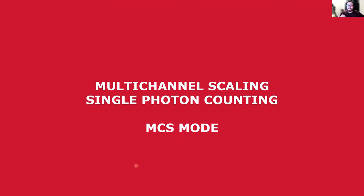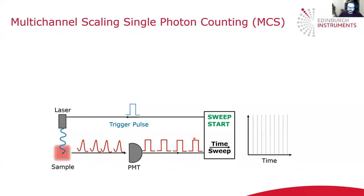The solution is to use a complementary measurement mode in the FLS1000 called multi-channel scaling single photon counting, or MCS mode for short. The basic layout of MCS mode is quite similar to TCSPC — we have counting electronics, a laser, a sample, and a detector. The difference is that this time the timing electronics trigger the laser rather than vice versa. So the timing electronics send a trigger to the laser telling it to fire. The laser fires and excites the sample. The sample emits multiple photons, which are detected by the detector and converted into electrical pulses, which are then recorded using the timing electronics.